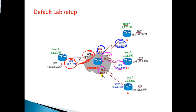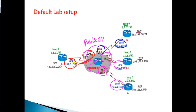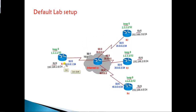Between Router 3 and Router 5 I'm using 35.0.0.5 and 35.0.0.3, and between Router 4 and Router 5 I'm using 45.0.0.5 and 45.0.0.4. These are all referred to as my public IP addresses — I'm going to assume these are internet-facing addresses connecting to the ISP. On the LAN side, Router 1 uses 192.168.1.0 network, Router 2 uses 192.168.2.0, Router 3 uses 192.168.3.0, and Router 4 uses 192.168.4.0.